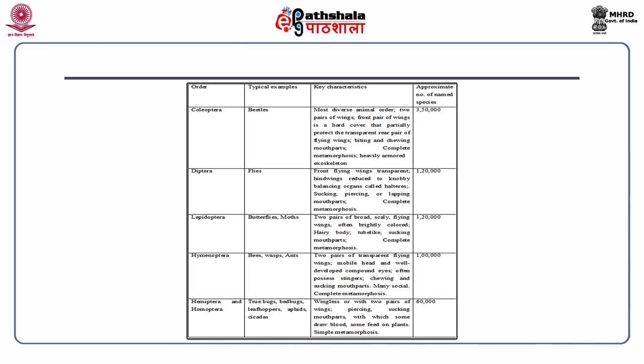Order Lepidoptera has two pairs of broad scaly flying wings, often brightly colored, a hairy body, and tube-like sucking mouthparts with complete metamorphosis. Order Hymenoptera has two pairs of transparent flying wings, a mobile head and well-developed compound eyes, often possesses stingers, chewing and sucking mouthparts, and many are social, with complete metamorphosis. Order Hemiptera and Homoptera insects are wingless or with two pairs of wings; they have piercing and sucking mouthparts with which some draw blood and some feed on plants; metamorphosis is simple.